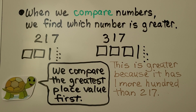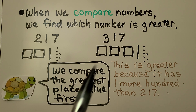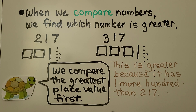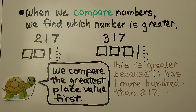When we compare numbers, we find which number is greater. We have 217 and 317. 317 is greater because it has one more hundred than 217. We compare the greatest place value first.